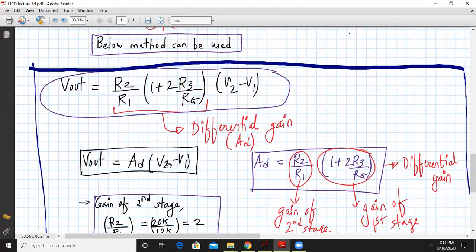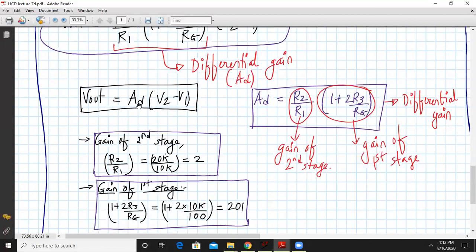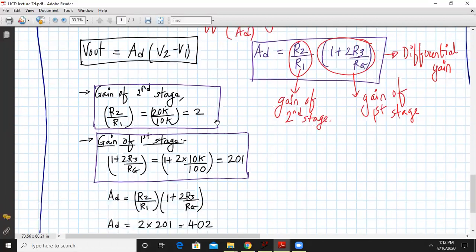We already have derived Vout = (R2/R1) × (1 + 2R3/Rg) × (V2 - V1). So it is directly evaluating the output voltage without intermediately calculating Vout1 and Vout2. This much is my differential gain where R2/R1 is my gain of the second stage and 1 + 2R3/Rg is the gain of the first stage. So Vout can be written as A_d times (V2 - V1). Let us evaluate by this technique.